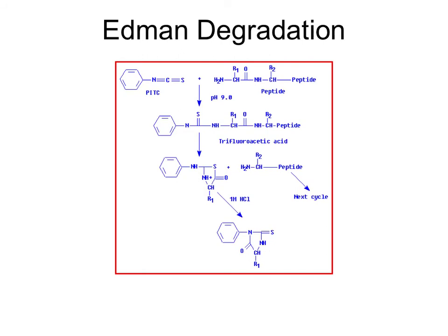Edman degradation, as discussed in lecture, takes phenyl isothiocyanate under basic conditions and reacts with the polypeptide. Upon subjecting it to TFA, or trifluoroacetic acid, you can cleave, forming an intermediate that produces the phenylthiohydantoin, which can then be identified, and you're left with the polypeptide chain after cleaving off the first N-terminal amino acid.